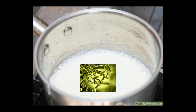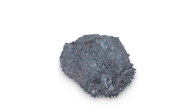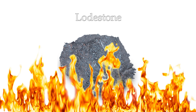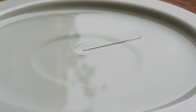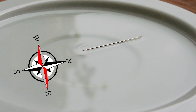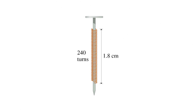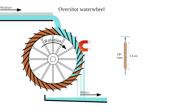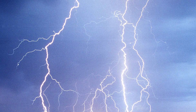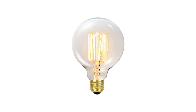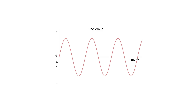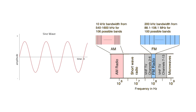Boil milk to kill all the small bad boys. Find lodestones and heat them up — now you have a magnet. Let the magnet move freely and it will act like a compass. Wrap some copper wire around an iron bar and put it near a water wheel with a magnet attached to it, and you have achieved electricity. Run electricity through tungsten and you have discovered the light bulb.